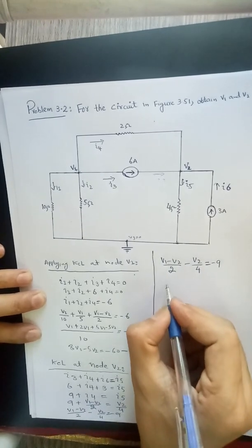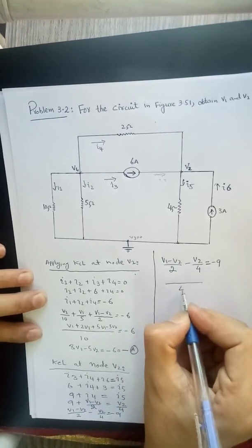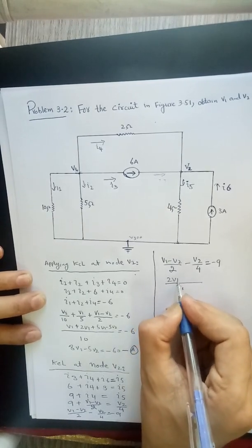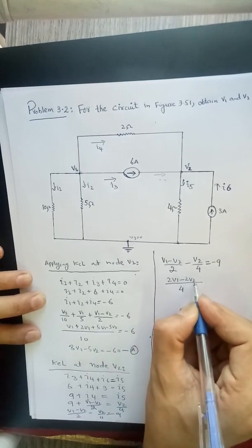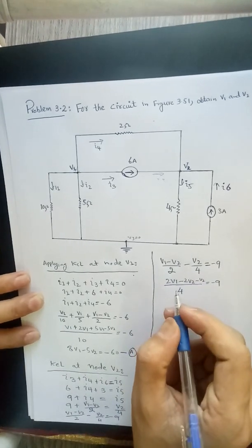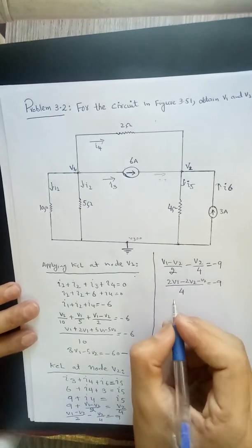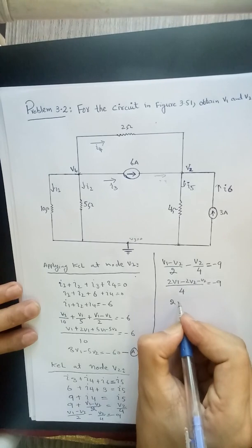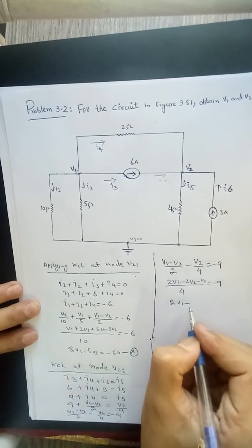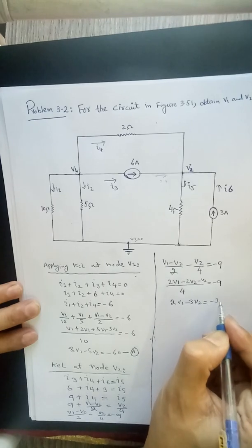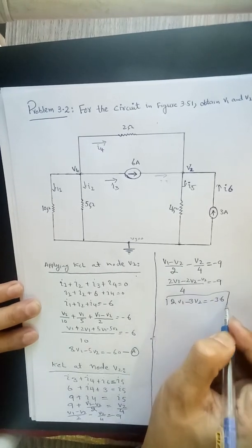V1 minus V2 divided by 2 minus V2 divided by 4 equal to minus 9. So taking 4 as the LCM, we can simply write 2V1 minus 2V2 minus V2 equal to minus 9, or 2V1 minus 3V2 cross multiplying 4 equals minus 36. Equation B.